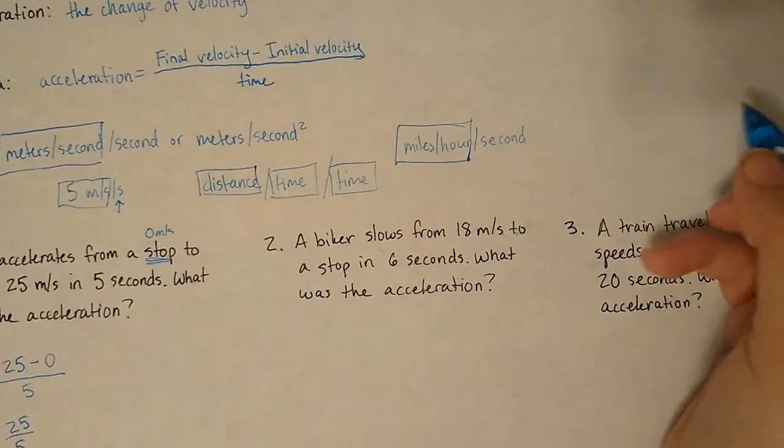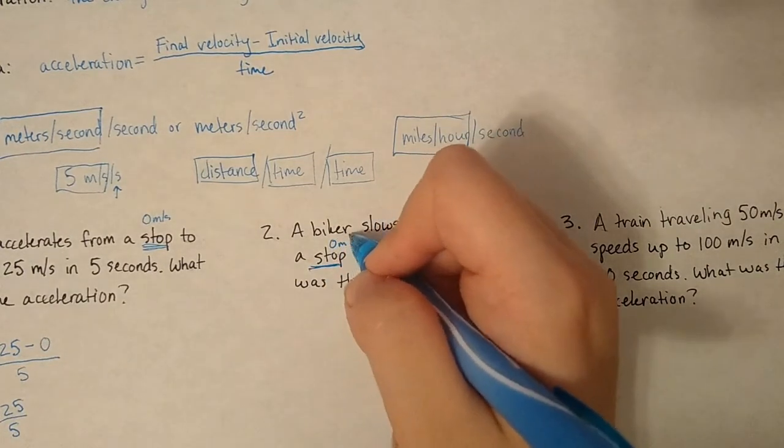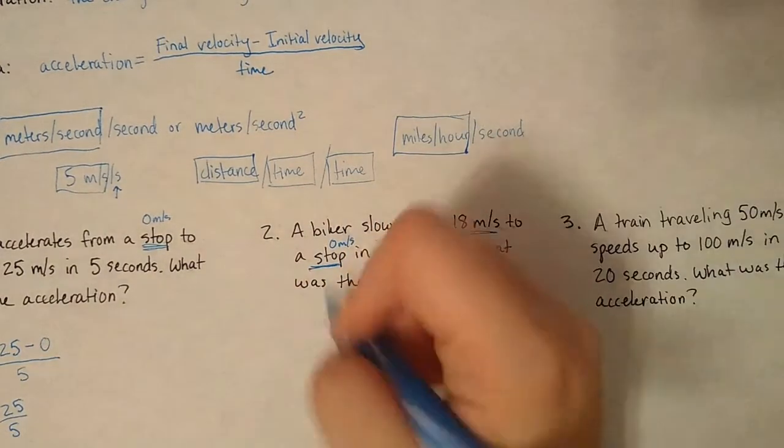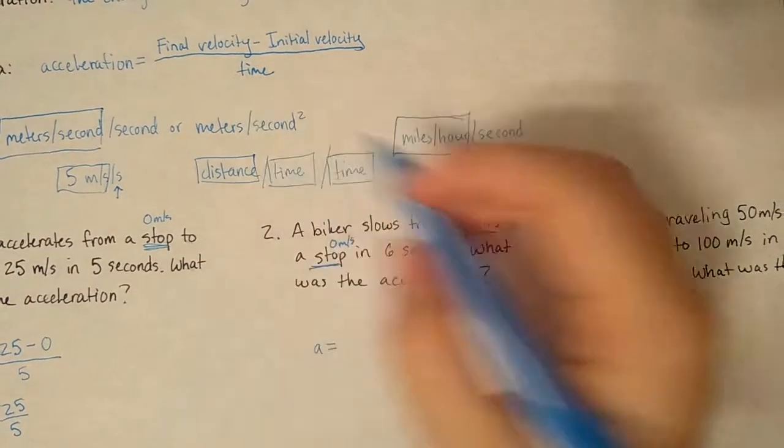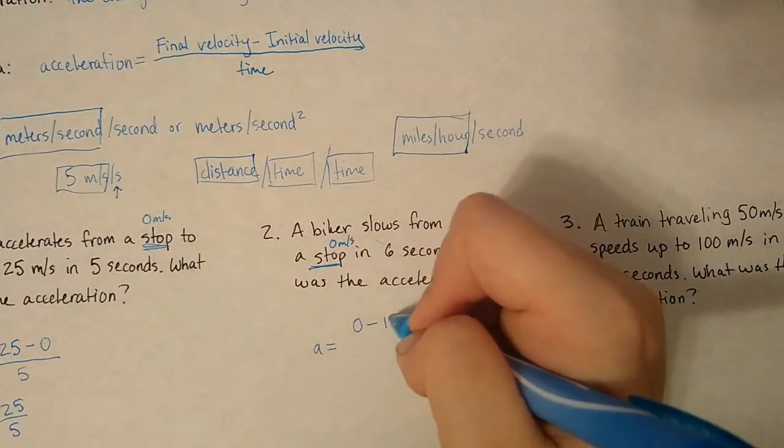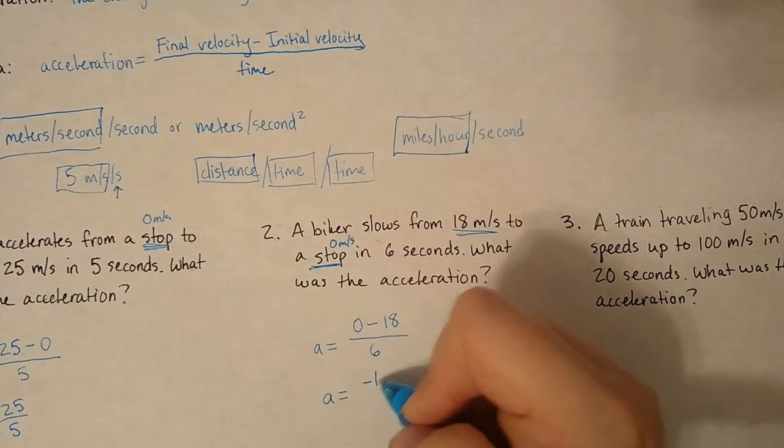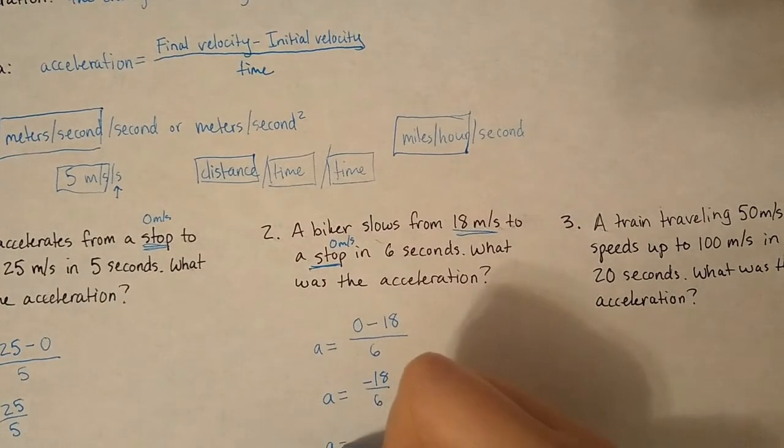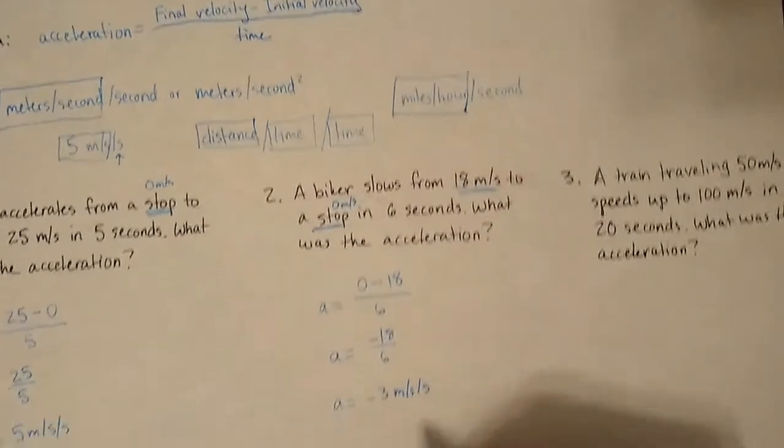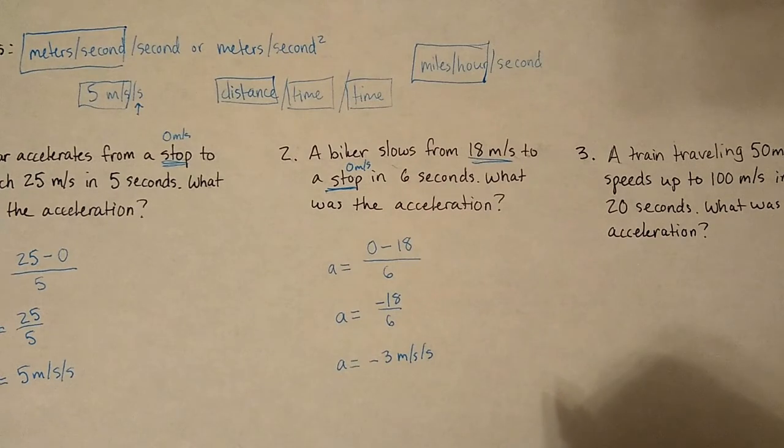Let's try another one. A biker slows from 18 meters per second to a stop, again zero meters per second, in six seconds. So acceleration equals our final velocity, which was zero, minus our initial velocity, which was 18, divided by our time, six seconds. A equals negative 18 over six. A equals negative three meters per second per second. Yes, as a matter of fact, your acceleration can be negative if you're decreasing your velocity. So deceleration, if it helps you to think of it like that.